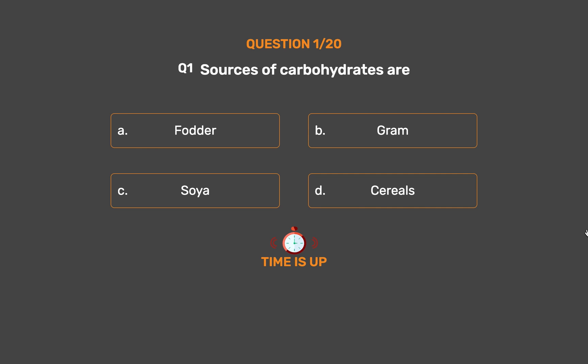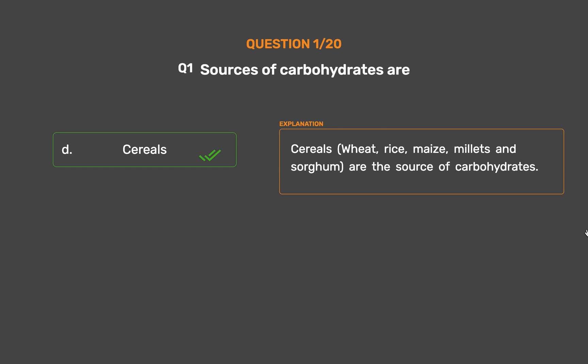The correct answer is Option D: Cereals. Cereals — wheat, rice, maize, millets and sorghum — are the source of carbohydrates.